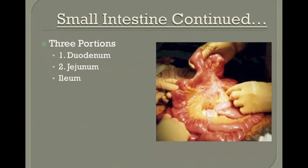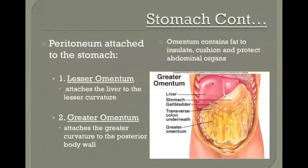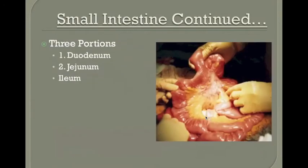Once the chyme is ready to move into the small intestine, it's going to move through each of the three regions. Here is a picture of the intestines, and you'll notice there's a substance called the mesentery holding them together — this is not the omentum. The mesentery holds the intestines together and is where nerves, arteries, and veins travel to keep them nourished and functioning. The three parts of the small intestine are: first the duodenum, then the jejunum, and then the ileum.